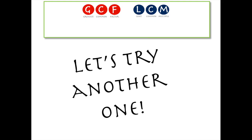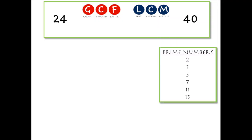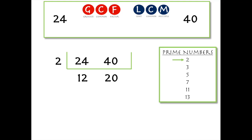Let's try another one. We'll find the greatest common factor and the least common multiple of 24 and 40. We bring in our prime numbers list, write down our two numbers, and draw a line. Does two go into 24 and 40? Yes. Two goes into 24 twelve times and into 40 twenty times. We repeat the process with 12 and 20 — two goes into both, so we draw another line: two goes into 12 six times and into 20 ten times.